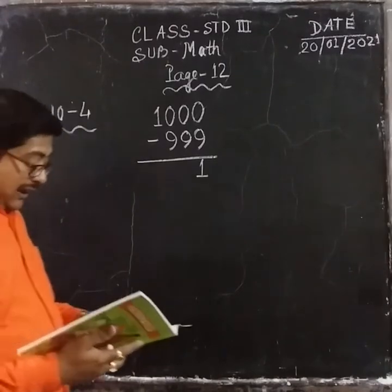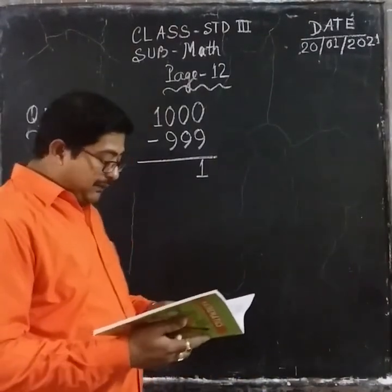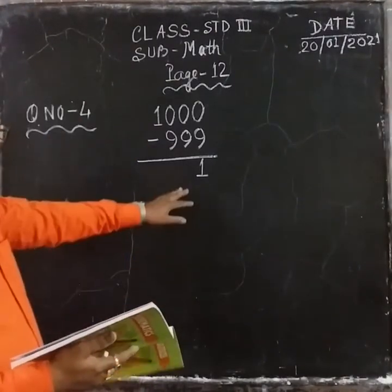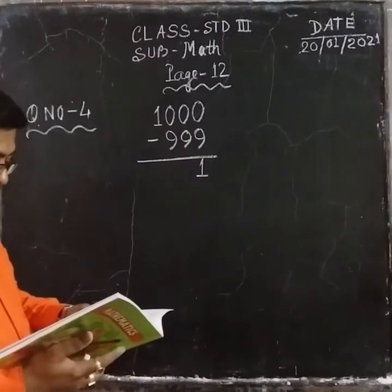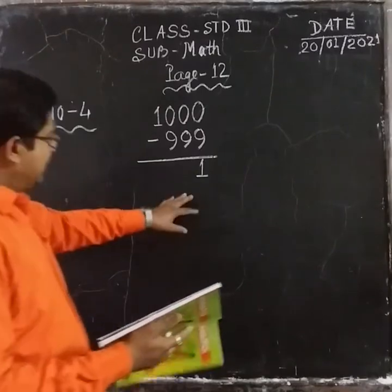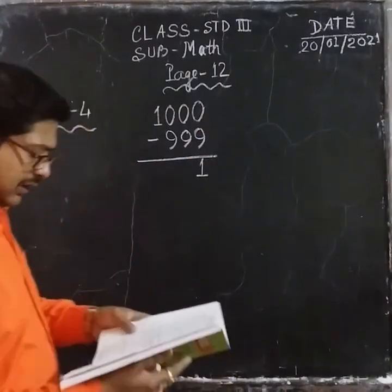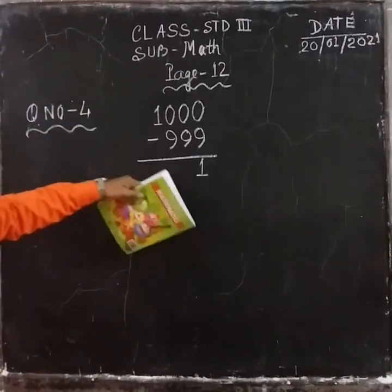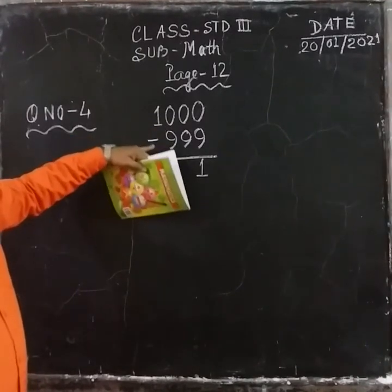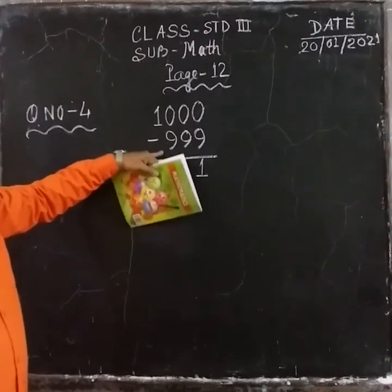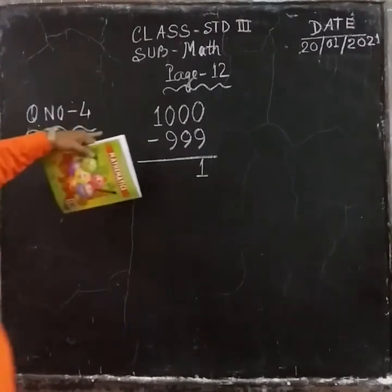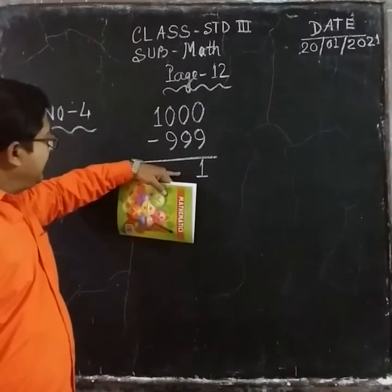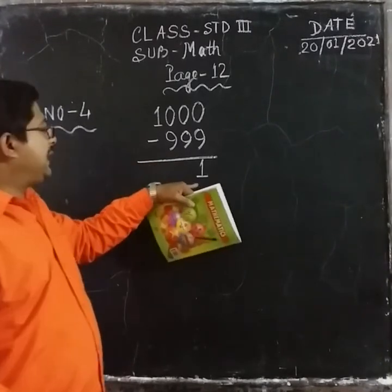So what is the answer? How much larger is the largest 3-digit number? The answer is 1. So the smallest 4-digit number is 1 larger than the largest 3-digit number.